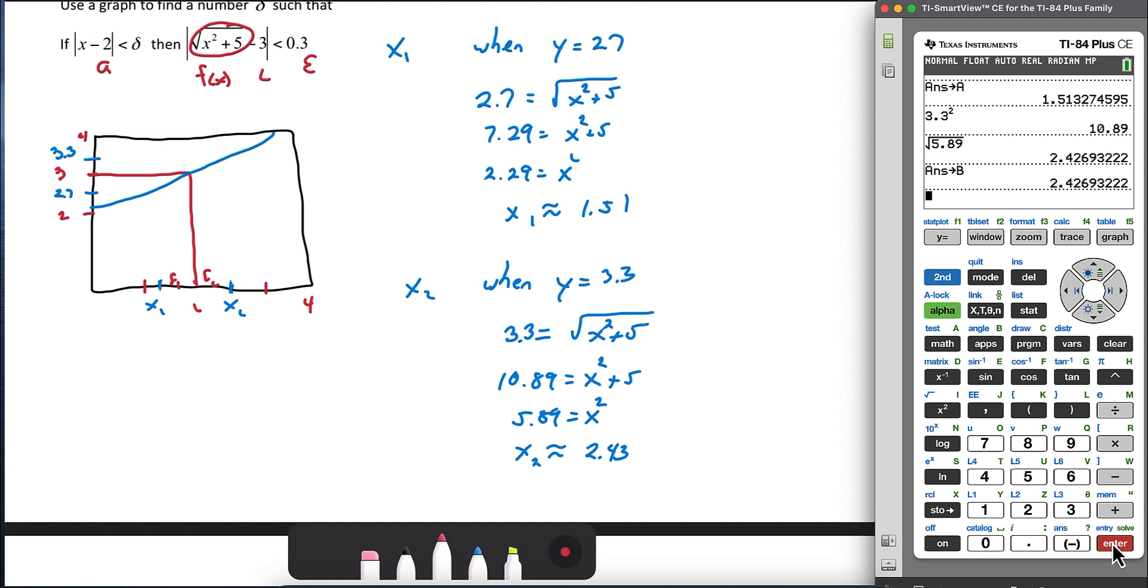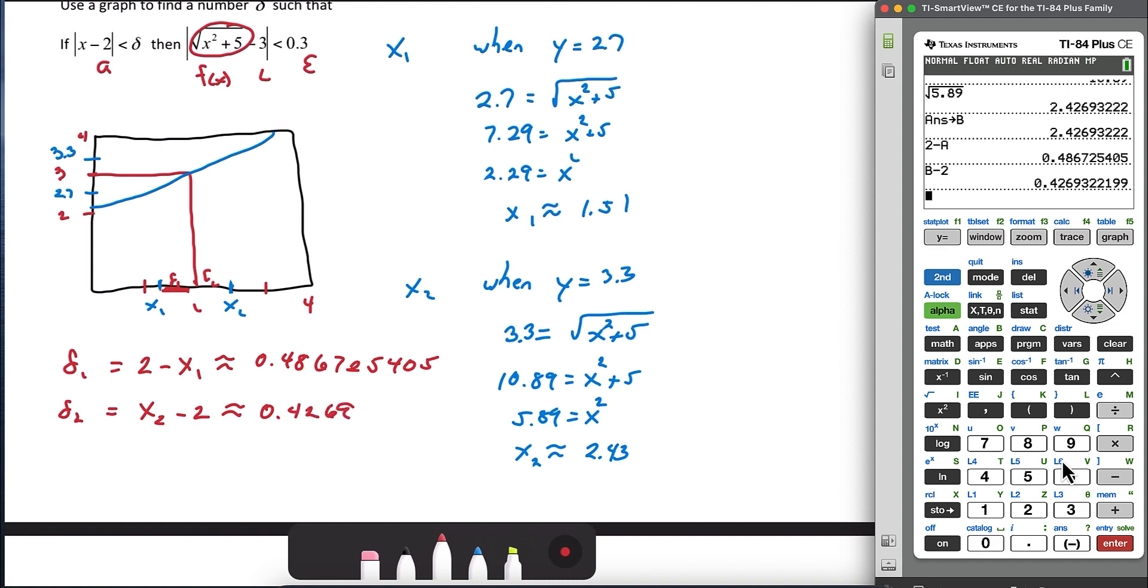Now we can find delta. Delta 1, again, here, is 2 minus x₁, which we will use in the calculator. So 2 minus that stored value was A. That gives me 0.486725405. I'll write down all of those for now. Delta 2 is x₂ minus 2. x₂ we stored in B. So alpha B minus 2 gives us 0.4269322199.